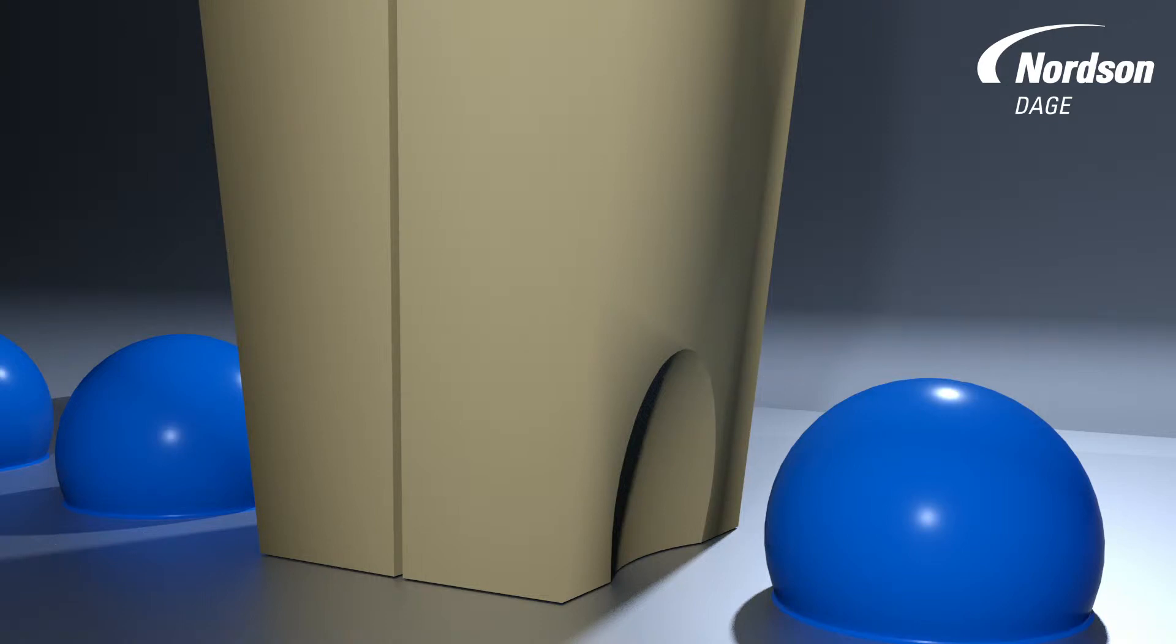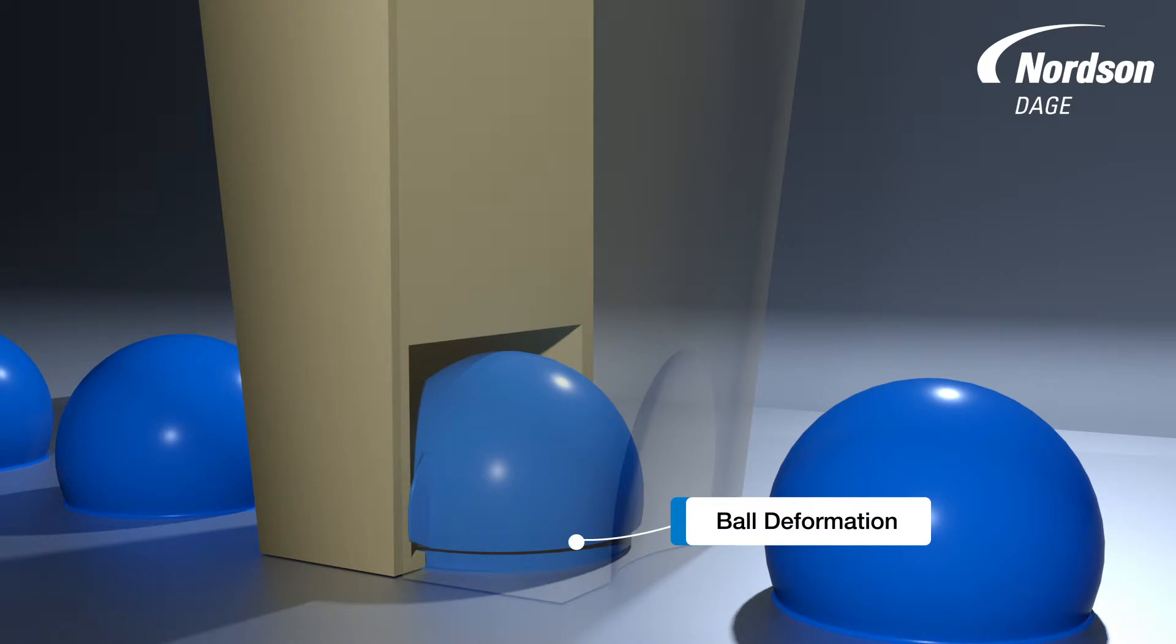During the test, the jaw cavity deforms the ball. The jaws should be the correct shape to avoid flashing between the jaw faces as shown here.